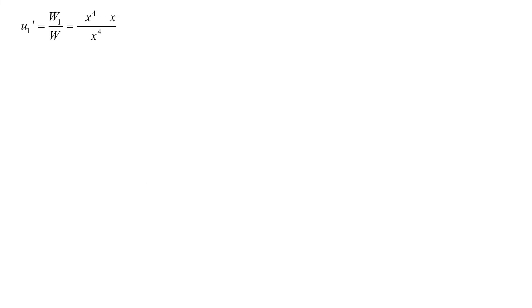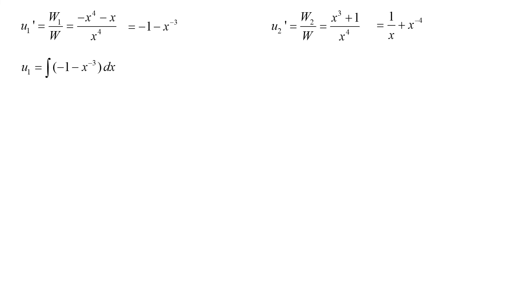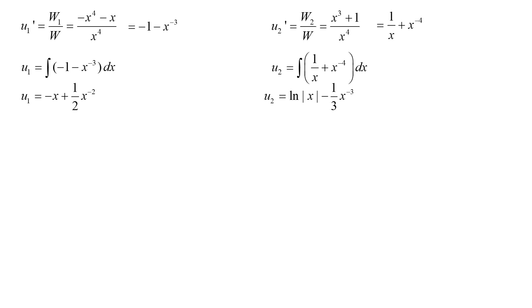We find u1' = W1/W = (-x⁴ - x)/x⁴ = -1 - x^{-3} and u2' = W2/W = (x³ + 1)/x⁴ = 1/x + x^{-4}. Integrating: u1 = -x + (1/2)x^{-2} and u2 = ln x - (1/3)x^{-3}.